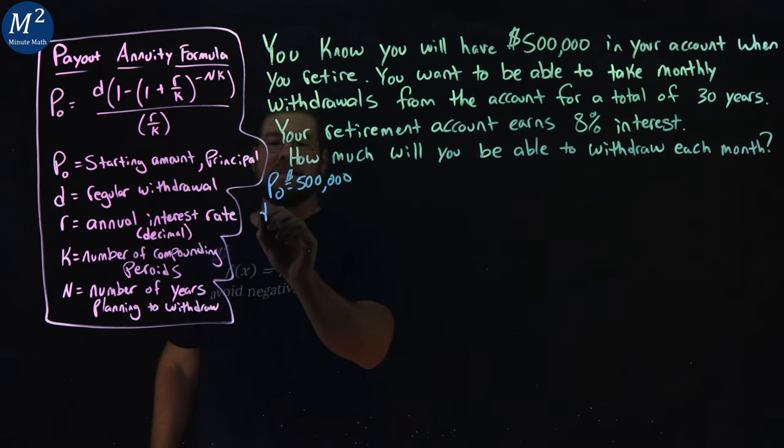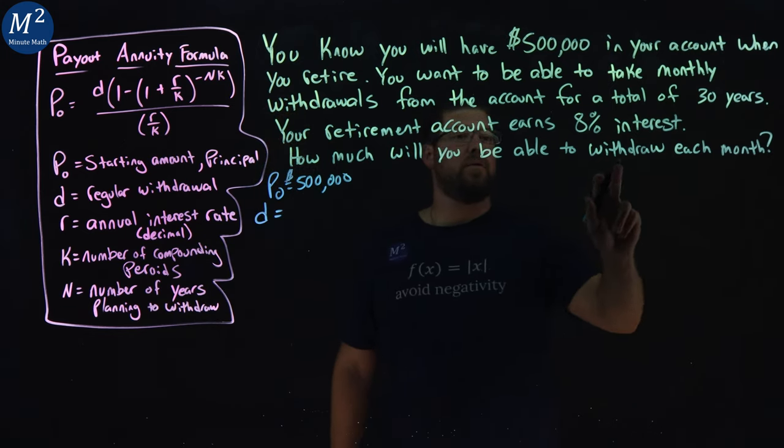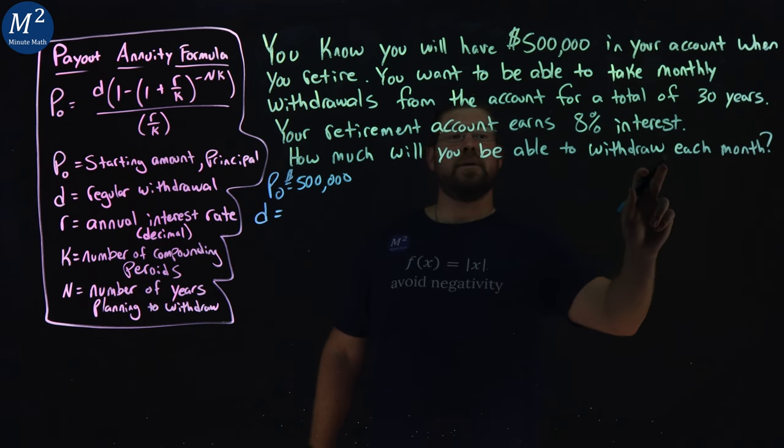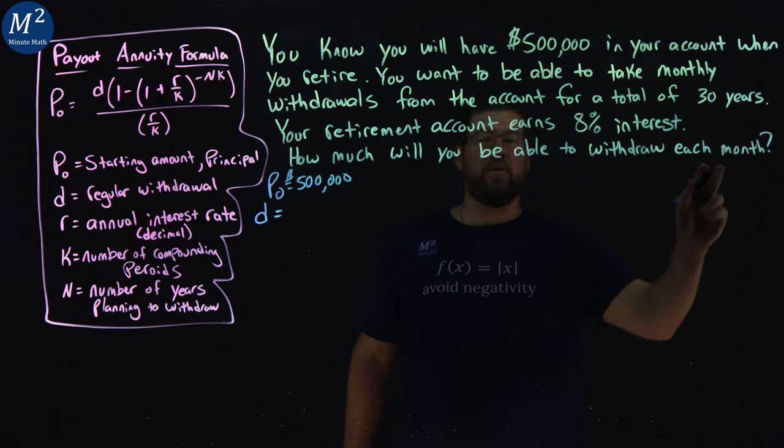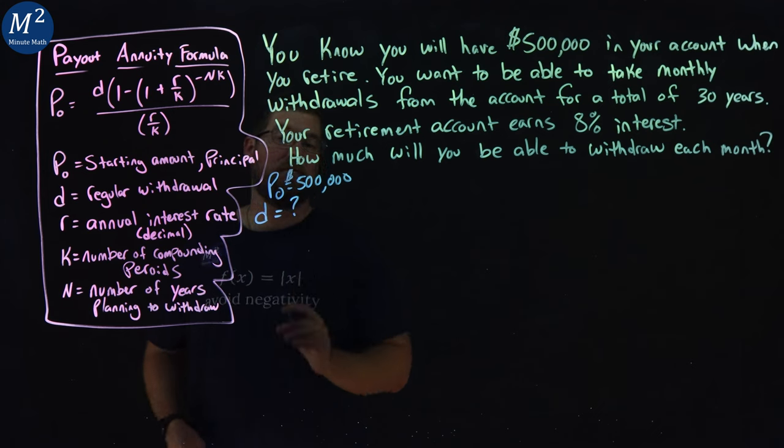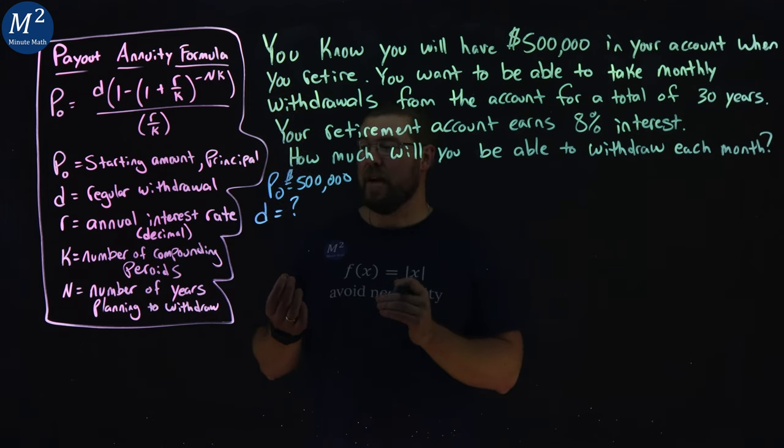Our regular withdrawal D, well, we want to know how much we will be able to withdraw each month. We don't know that value. That is the value we're trying to find. We're trying to find the D value.